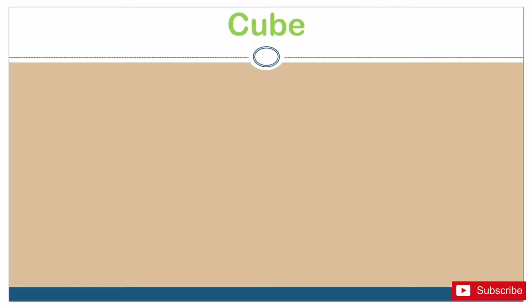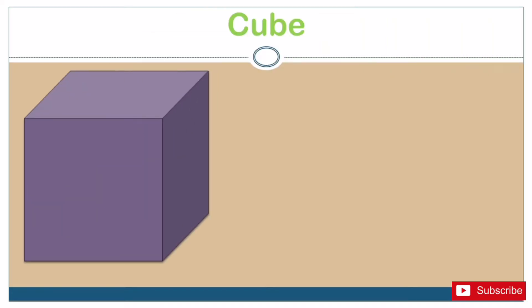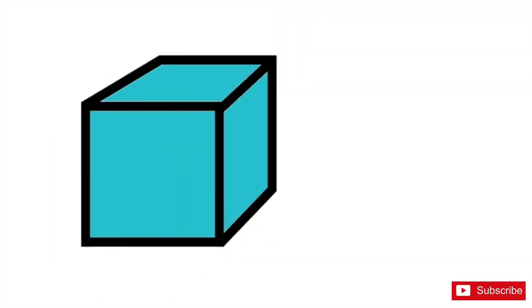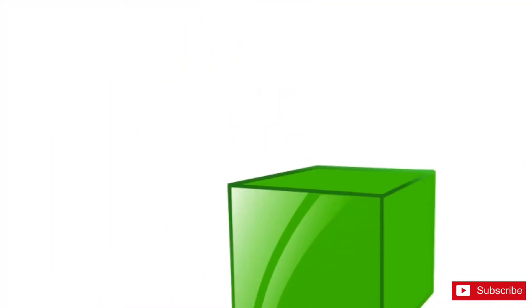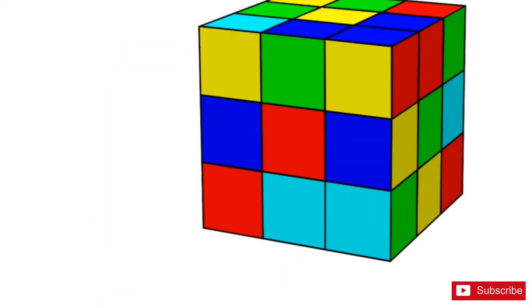Let's look at the cube. A cube has six faces, all of the faces are squares. It has eight vertices and 12 edges. All of these objects are cubes.